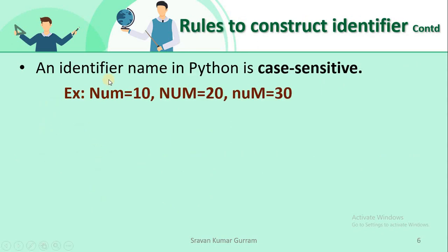The next rule is: an identifier name in Python is case sensitive. Case sensitive means uppercase and lowercase letters are treated as different. For example, uppercase 'A' is completely different from lowercase 'a'. Consider three identifiers: 'Number' (capital N), 'NUMBER' (all capitals), and 'nuMber' (capital M). Even though the word NUM is the same, different casings make them completely different identifiers. Python treats these three as completely different — that is the meaning of case sensitivity.